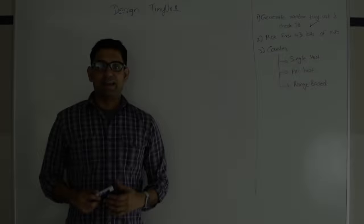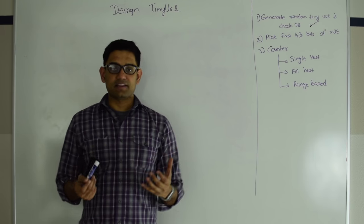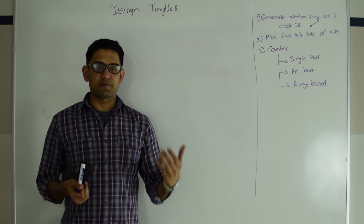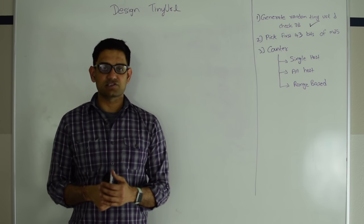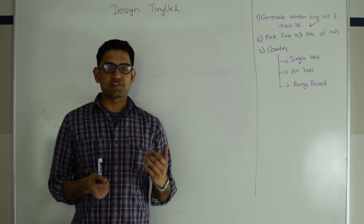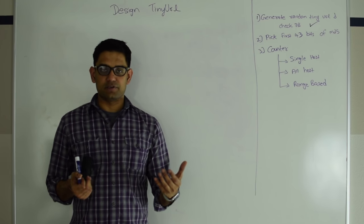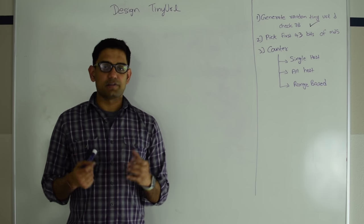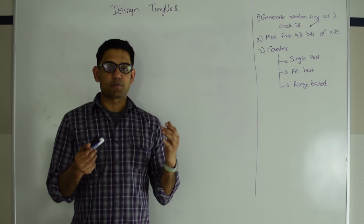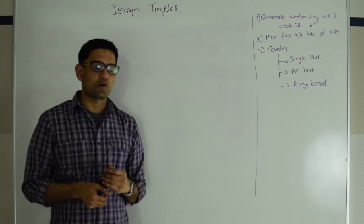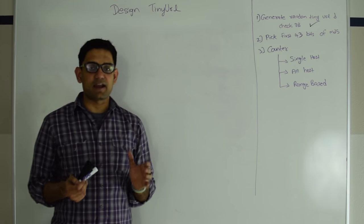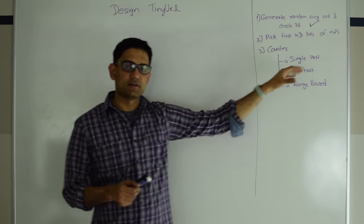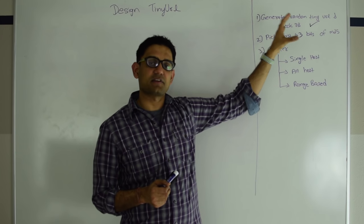Next, let's look at the MD5 approach. In the MD5 approach, we calculate the MD5 of the longer URL, then take the first 43 bits of that MD5 and use that to generate the tiny URL. MD5 is a hashing function which generates a 128-bit long hash, and out of that we take 43 bits to generate the tiny URL. There is a probability of collision: if you take more bits the probability decreases but your tiny URL gets longer; if you take fewer bits the probability increases but the URL gets shorter. Since we want a 7-character long tiny URL, we take 43 bits. To be foolproof, we generate the tiny URL and then apply the database-checking technique discussed before.